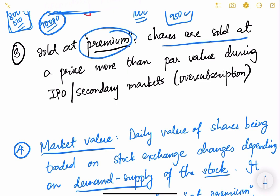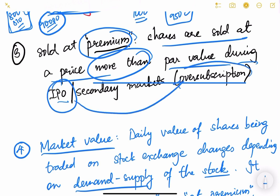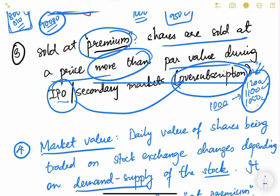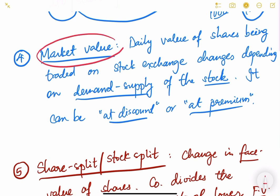Similarly, sold at premium means the opposite of sold at discount — shares are sold at a price more than the par value during the IPO or in secondary markets. If during the IPO there is oversubscription, shares with a par value of rupees 1000 may get sold at 1100, 1050, or even 1200, depending on how enthusiastic investors are about that particular IPO or company.